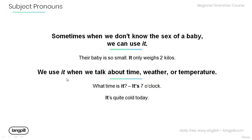We also use 'it' when we talk about time, weather, or temperature. For example: 'What time is it? It's seven o'clock.' And: 'It's quite cold today.'